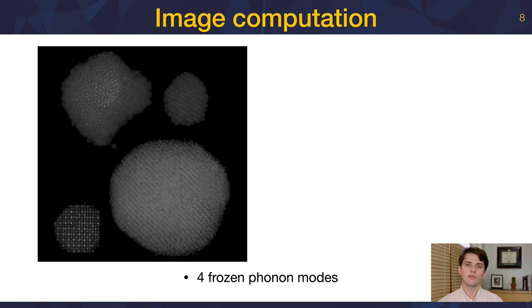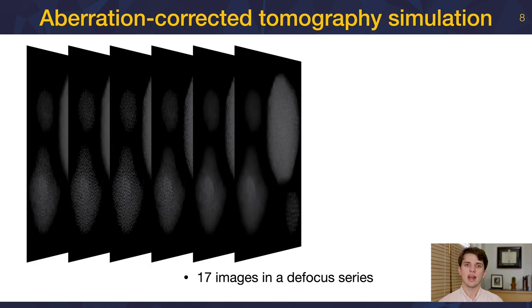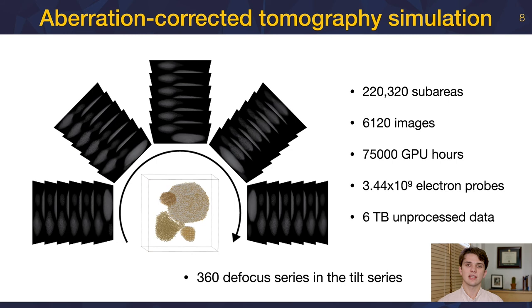On top of this, we compute four frozen phonon modes for each image. This simulates the effect of thermal perturbations in the microscope. In order to create aberration-corrected tomography data, we collect an image at each of 17 defocus steps for each of 360 tilt values. This gives us a tilt step of half a degree and a defocus step of 9 angstroms. In total, we calculate more than 6,000 images over 75,000 GPU hours. In this computation, we propagated nearly 3.5 billion electron wavefunctions.